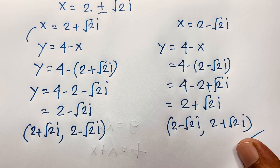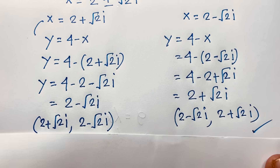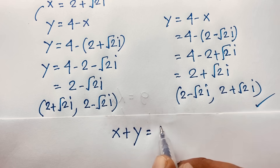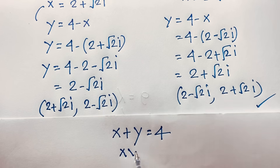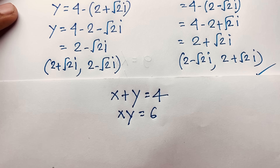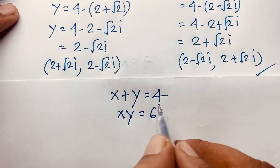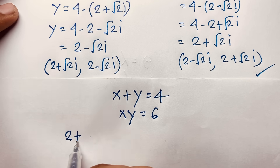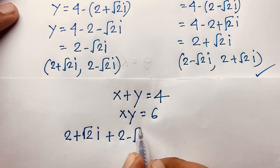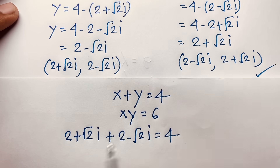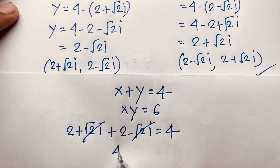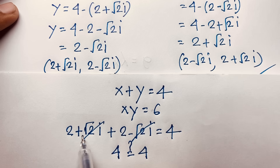Let's check our answer. Verifying the first equation, x plus y equals 4: substituting x equals 2 plus square root 2i and y equals 2 minus square root 2i, the imaginary parts cancel and we get 2 plus 2 equals 4. So the complex solution is correct.